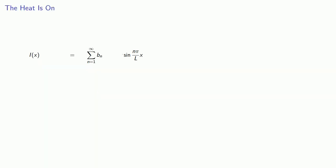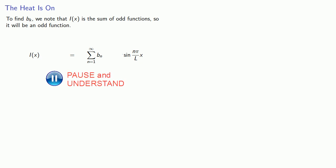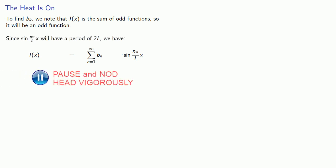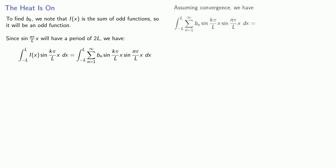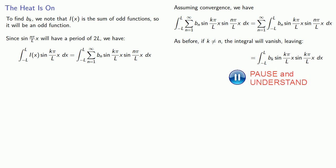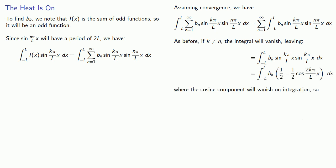So now i of x is a trigonometric series. To find the coefficients b n, we'll make a few observations. First, i of x is a sum of odd functions, so it will also be an odd function. Since sine of n pi over l x will have period to l, we'll multiply by sine k pi over l x and then integrate over the interval between minus l and l. So assuming convergence, we can interchange the integral and the summation. As before, since we're integrating over one pole period, if k is not equal to n, the integrals will vanish, leaving only the integral of bk sin k pi l sin k pi l. And that's going to be... Where the cosine component will vanish on integration, and so we get b k l.